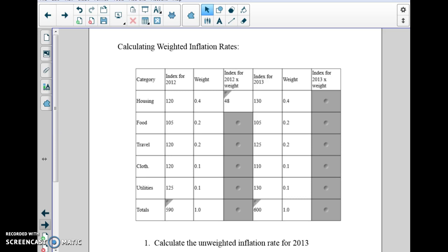48, and you can see that that is now the index for that year using the weight. So I want you to go ahead, and I want you to do the same thing with each of those numbers. Let's take 20% of 105.